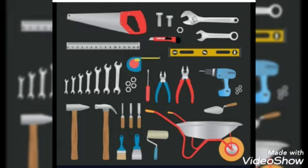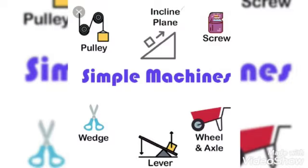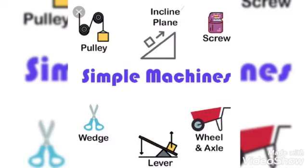All these tools help us with our work. A machine is a tool that can do work. It is a device which helps us to do work easily by applying less force and less energy.